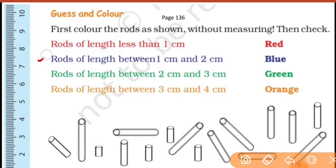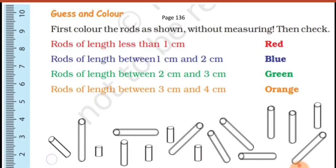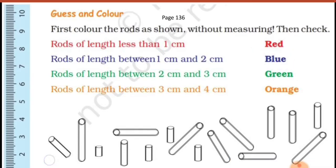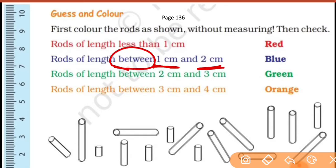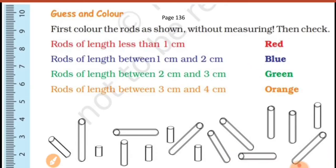Next, there are rods of length between 1 cm and 2 cm. Which means the length is more than 1 cm but less than 2 cm. Between 1 cm and 2 cm — you can color those with blue color.